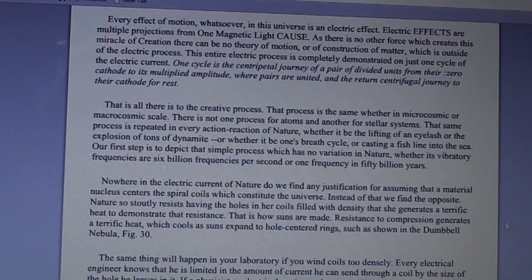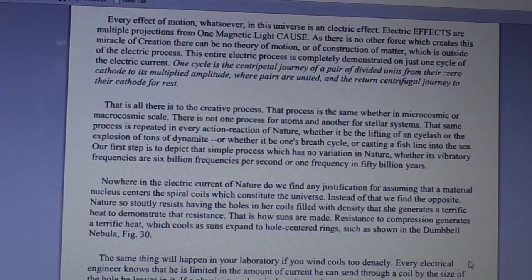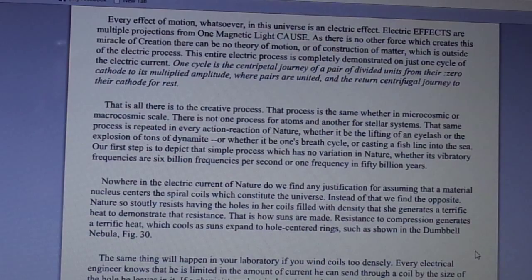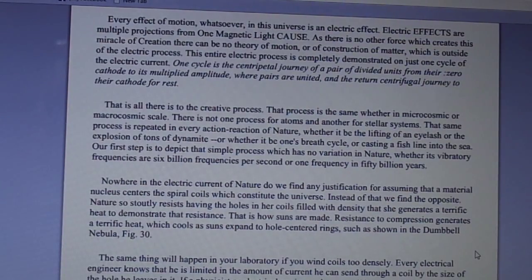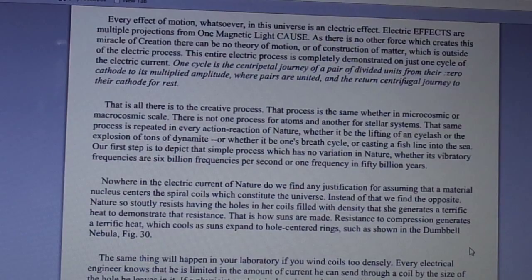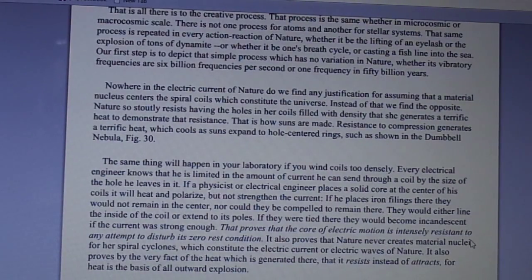Nowhere in the electric current of nature do we find any justification for assuming that a material nucleus centers the spiral coils which constitute the universe. Instead of that, we find the opposite. Nature so stoutly resists having the holes in her coils filled with density that she generates a terrific heat to demonstrate that resistance. That is how suns are made. Resistance to compression generates a terrific heat which cools as suns expand to hole-centered rings, such as shown in the dumbbell nebula. The same thing will happen in your laboratory if you wind coils too densely. Every electrical engineer knows that he is limited in the amount of current he can send through a coil by the size of the hole he leaves in it.